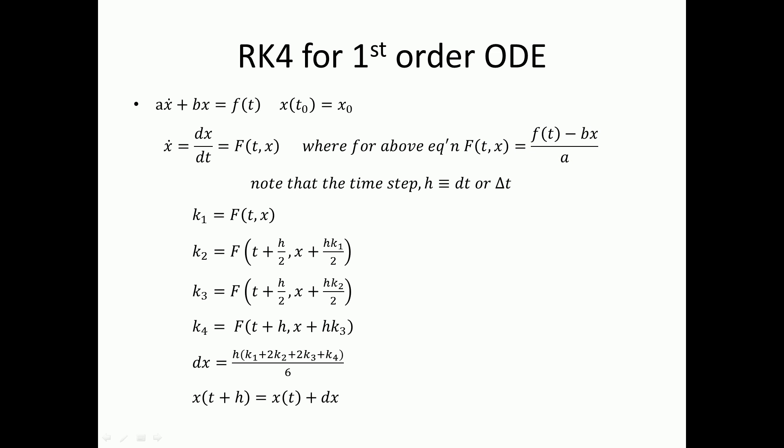Then once you have that function, you can now calculate the individual slopes. The first slope is simply the slope at current time and current position. The second slope is the slope at a half time step ahead, and the first slope is used to approximate the position at a half time step ahead. The third slope is similar to the second one. It's also a half time step ahead, but you use the second approximation for the slope in order to approximate the position.